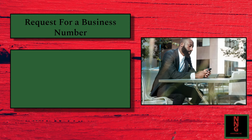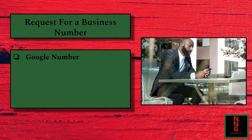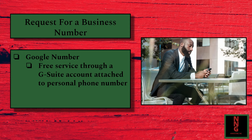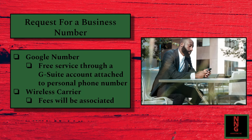You need to register for a business phone number. You can do this through Google — with a G Suite or Google account, you can attach a Google number to your current cell phone and use the Google Phone app to place calls and send messages through that number. Alternatively, you can go to your wireless carrier and, for an additional fee, obtain a dedicated business number, keeping your personal number separate from your business.